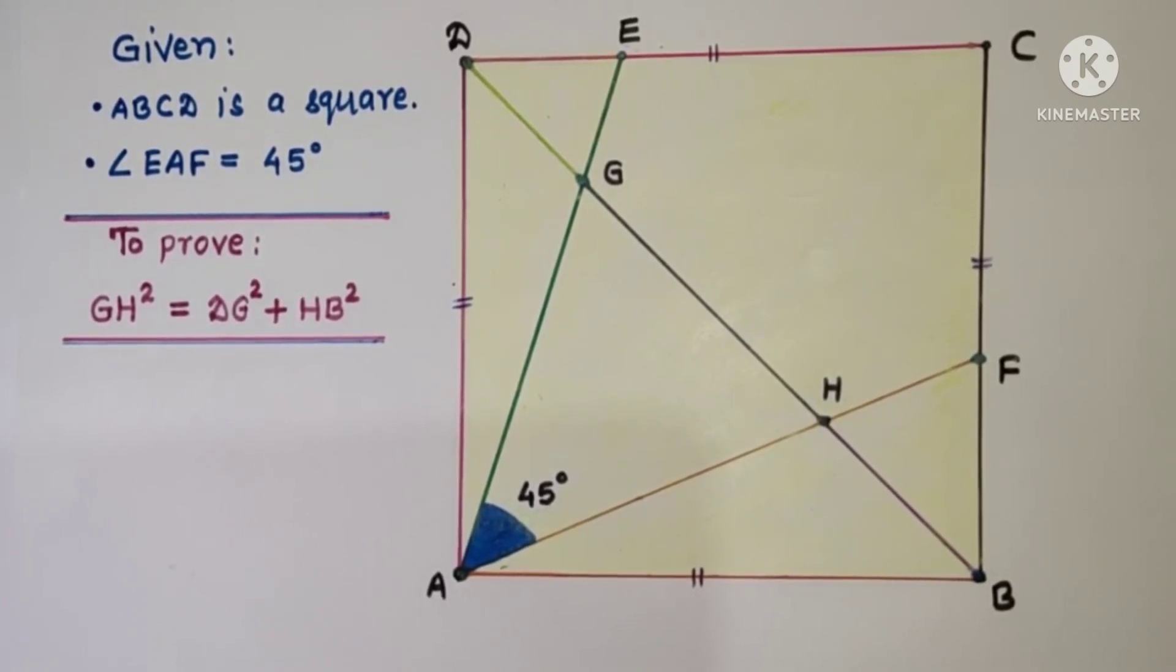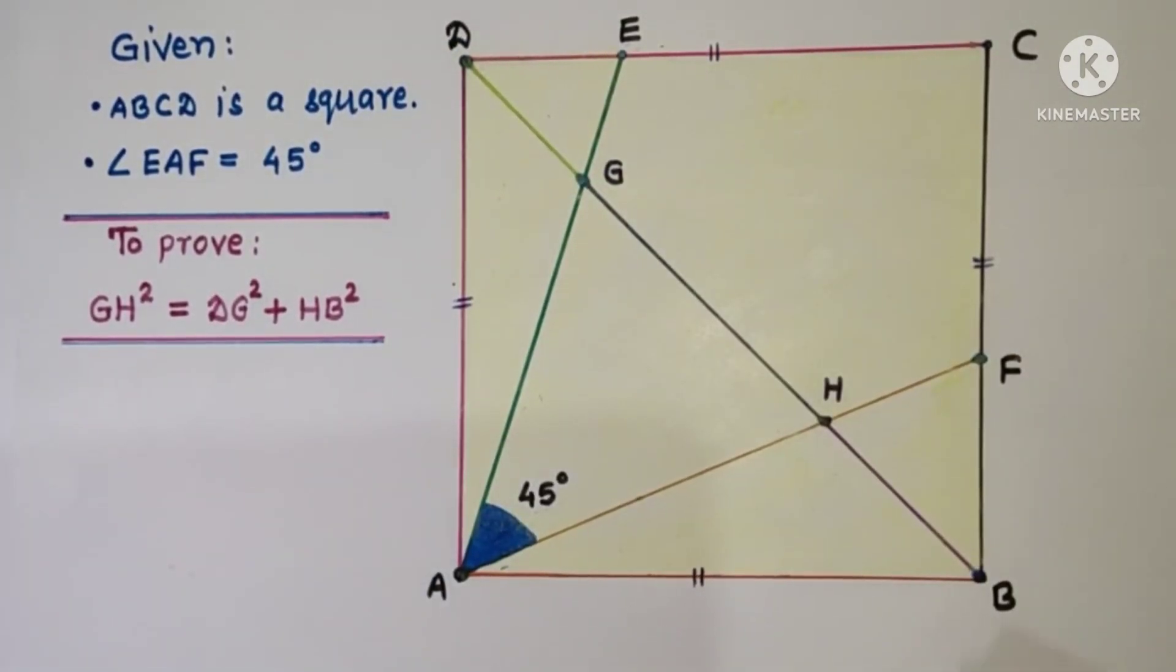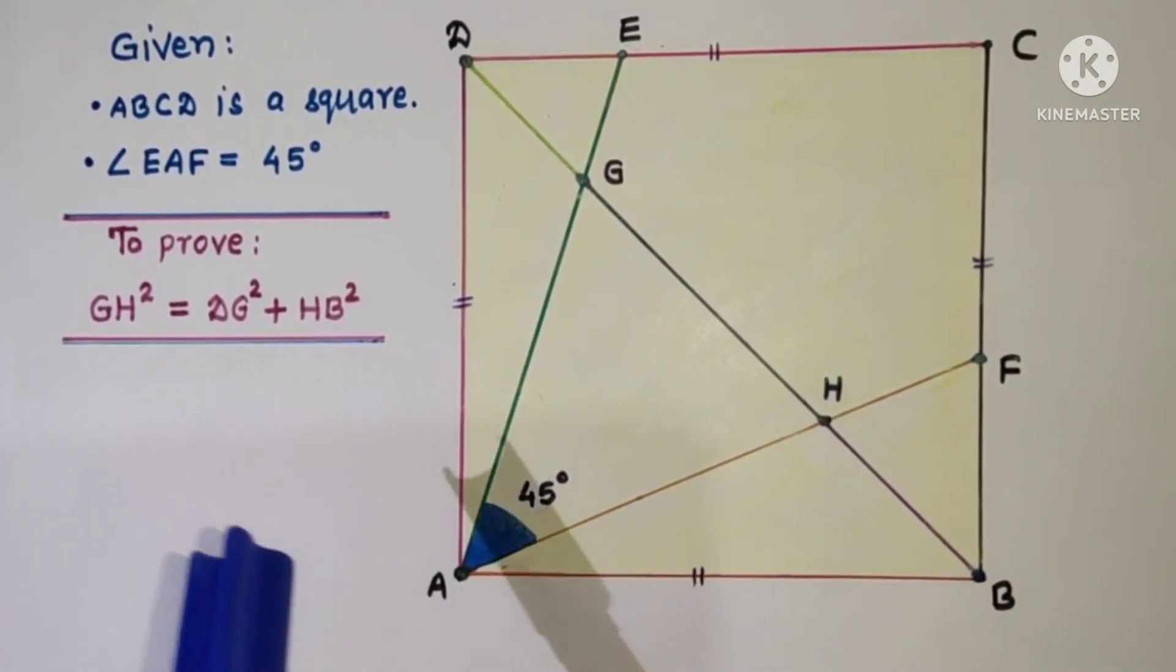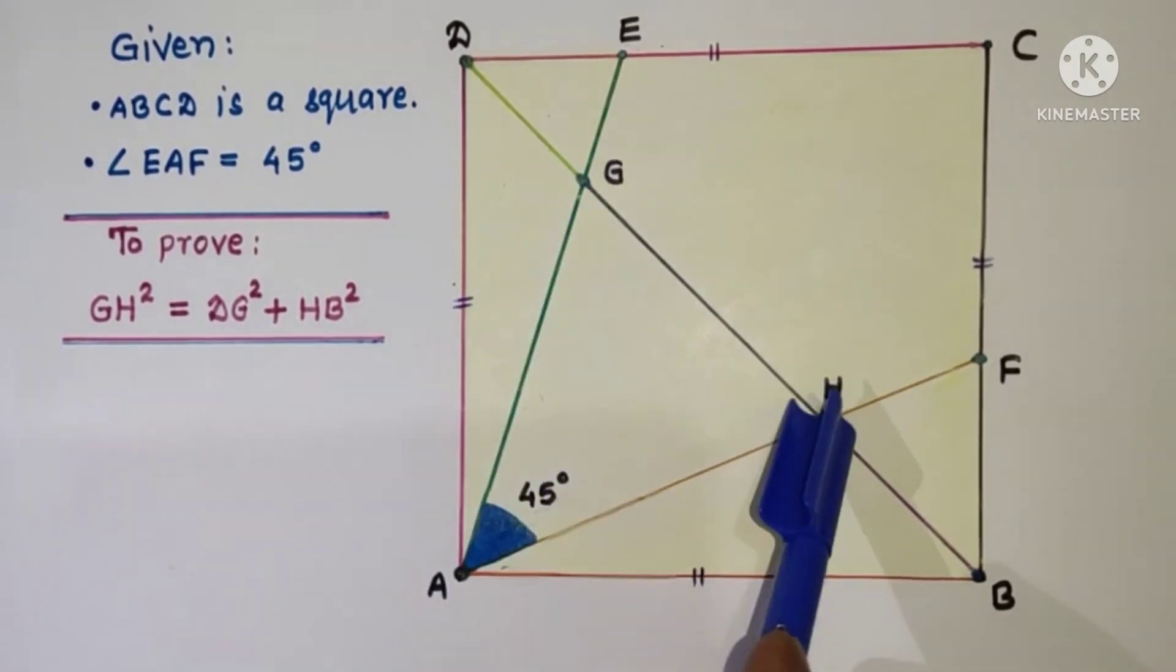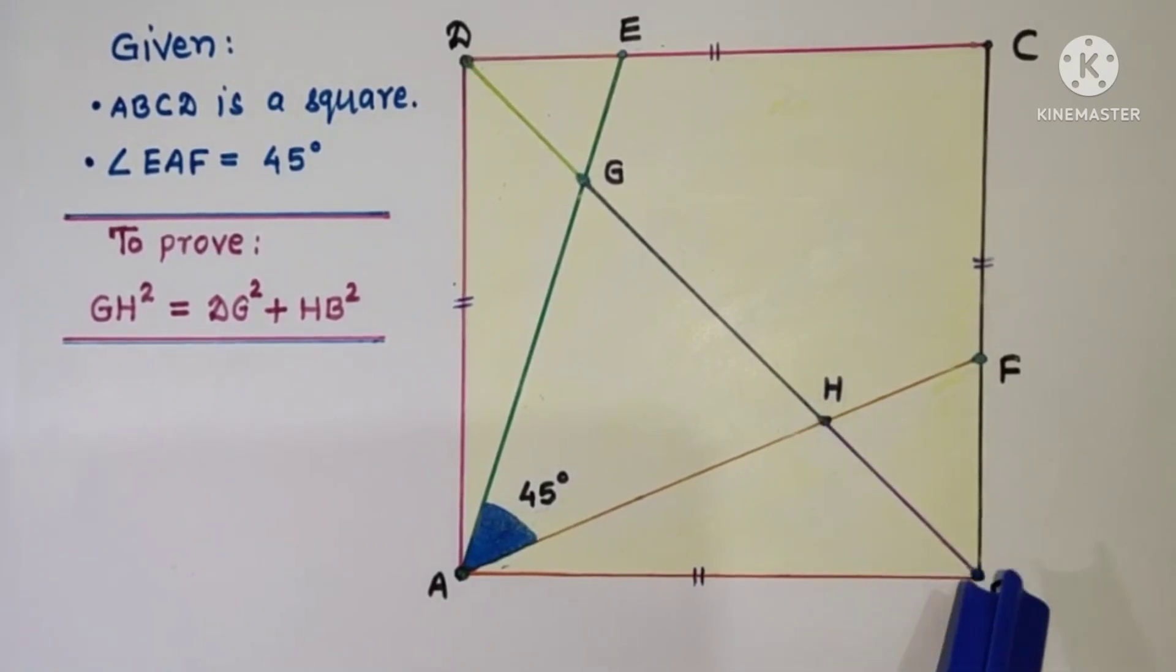In this question we are given that ABCD is a square and angle EAF is 45 degrees and we have to prove that GH square is equal to sum of DG square plus HB square.